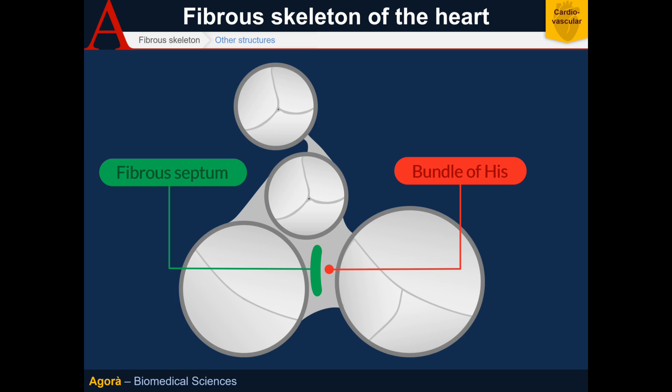The fibrous skeleton has two main functions. Its structural role is to be the place of attachment for the various muscular structures that make up the myocardium. Its functional role is to be an electrical isolator between the atria and the ventricles. This system exists because the atria and ventricles must be functionally isolated — they must never contract together, otherwise the heart could not perform its function.